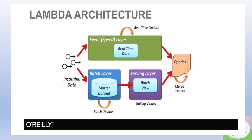Let's try to understand this from the architecture diagram. Here you can see that whatever data is coming to the system from different sources will go into two different layers. One is the speed layer where stream processing is happening, and the other is the batch layer which contains the entire master data for the system. Then there is a third layer, which is the serving layer, which merges the data from the speed and the batch layer to eventually create a data mart for downstream systems.